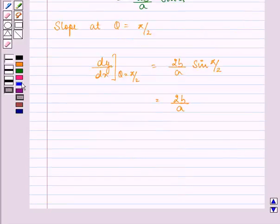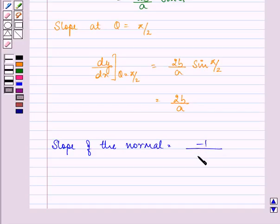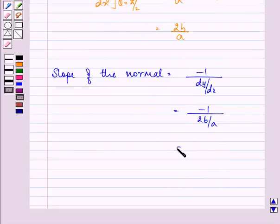But we need to find out the slope of the normal which is equal to minus 1 upon dy by dx, which is equal to minus 1 upon 2b by a which is further equal to minus a upon 2b.